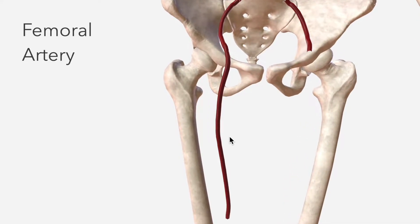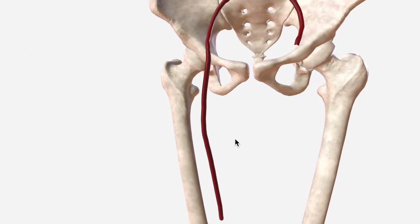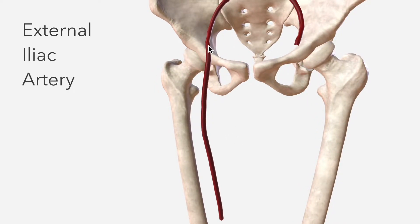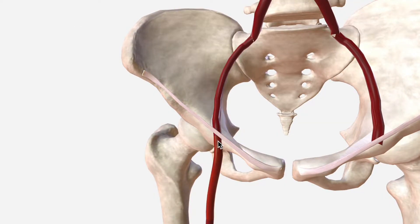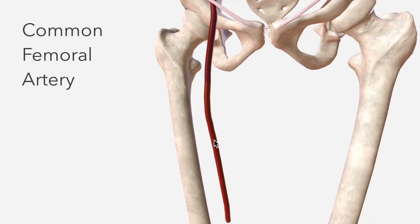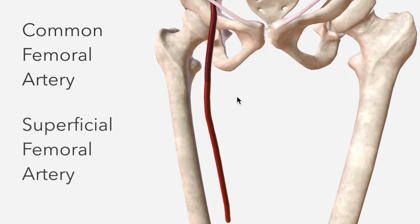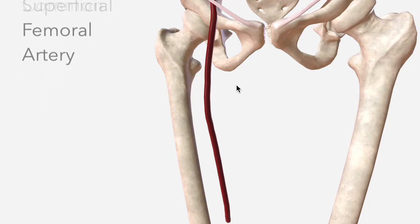The femoral artery supplies most of the thigh and all of the leg and foot with arterial blood. It's the continuation of the external iliac artery as it passes underneath the inguinal ligament. In some texts, this portion will be referred to as the common femoral artery, and the distal portion as the superficial femoral artery. But in most texts nowadays, these are together referred to as the femoral artery.